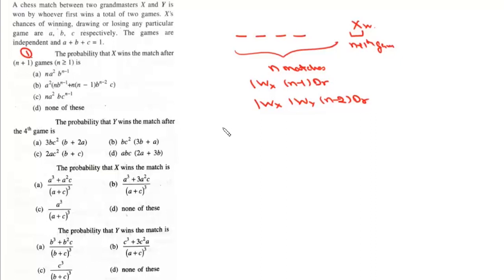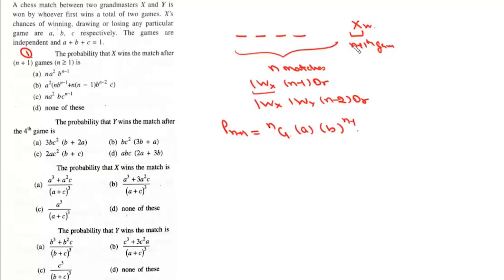Let us call this probability P_{n+1}. For the first case: one win by X, chosen in nC1 ways, with n-1 draws giving b^(n-1), and the (n+1)th game won by X giving factor a. So the first term is n · a² · b^(n-1).